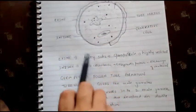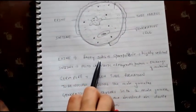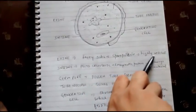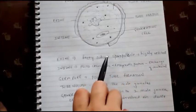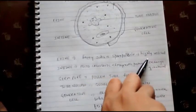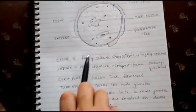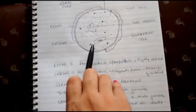Exine, the outermost layer, consists of fatty substance known as sporopollenin, which is highly resistant to many extreme conditions like temperature and thus protects the pollen grain.